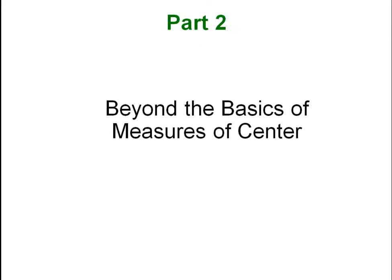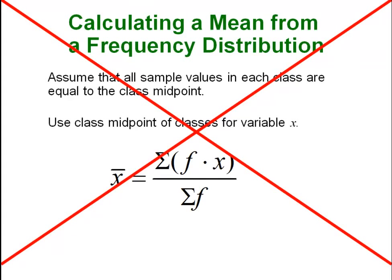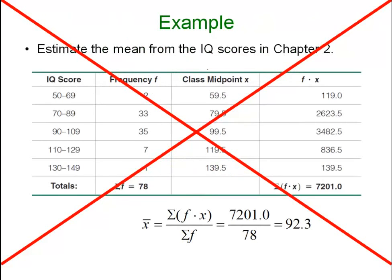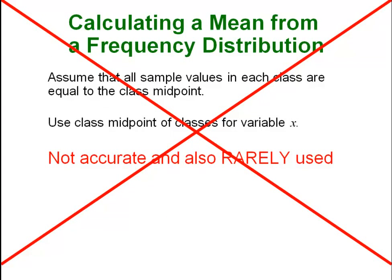Next we have beyond the basics of the measures of center. It is just some slides talking about other ways to calculate these things. The first one is something we won't be doing because calculating the mean from a frequency distribution is not helpful. It is just another technique of doing the same thing. So why learn how to do something twice? You can skip this. It is rarely used and it often times can have problems because you are basically assuming all of your data are the same in each class. We are not doing it.